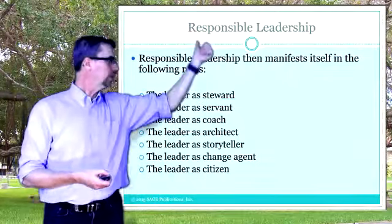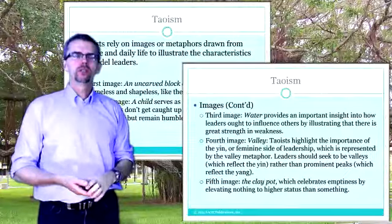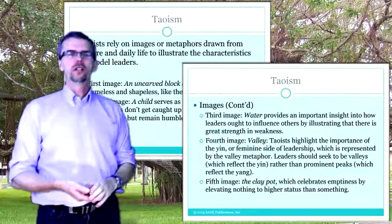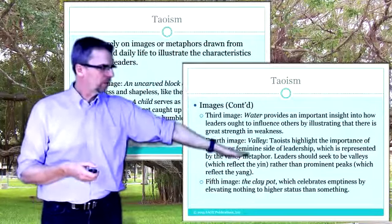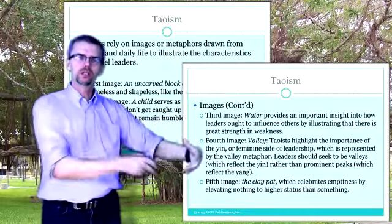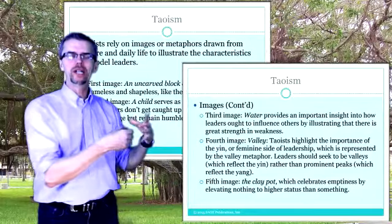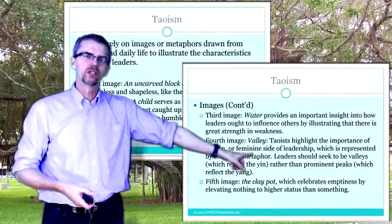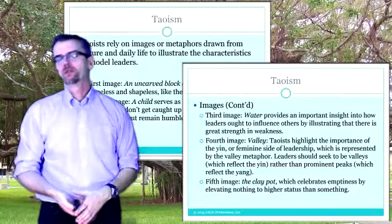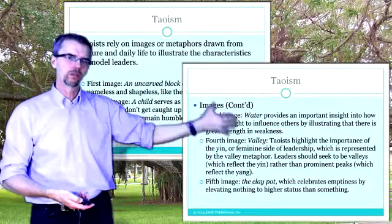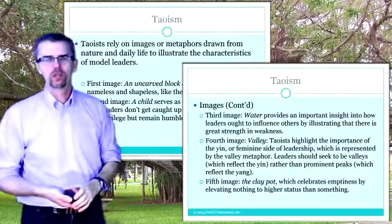Responsible leadership is another good list you can pull from as Johnson talks about how good leadership manifests itself in specific roles. And Taoism is the final normative theory he covers, relying upon five metaphors or images. The one I like best is the clay pot — an empty vessel that gets you to focus on it, but there's nothing there. Taoism is an incredible tool for a leadership style, but Johnson gives you lots of cautions to look for on a Taoist approach to leadership.